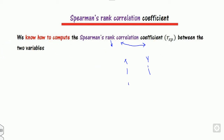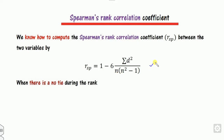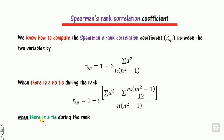How do you calculate the rank correlation coefficient? There are two equations. The first equation is used when there is no tie between the ranks, where n is the number of elements of variable x. When there is a tie between ranks, you use a second expression where d is the difference of the ranks of x and y, and m is the number of repetitions in the rank.